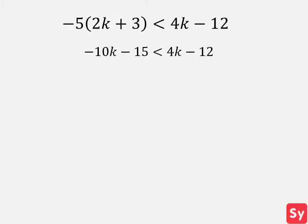Last example, this one is a little trickier. We have negative 5 times 2k plus 3 is less than 4k minus 12. First, we distribute negative 5 on the left-hand side of the inequality.